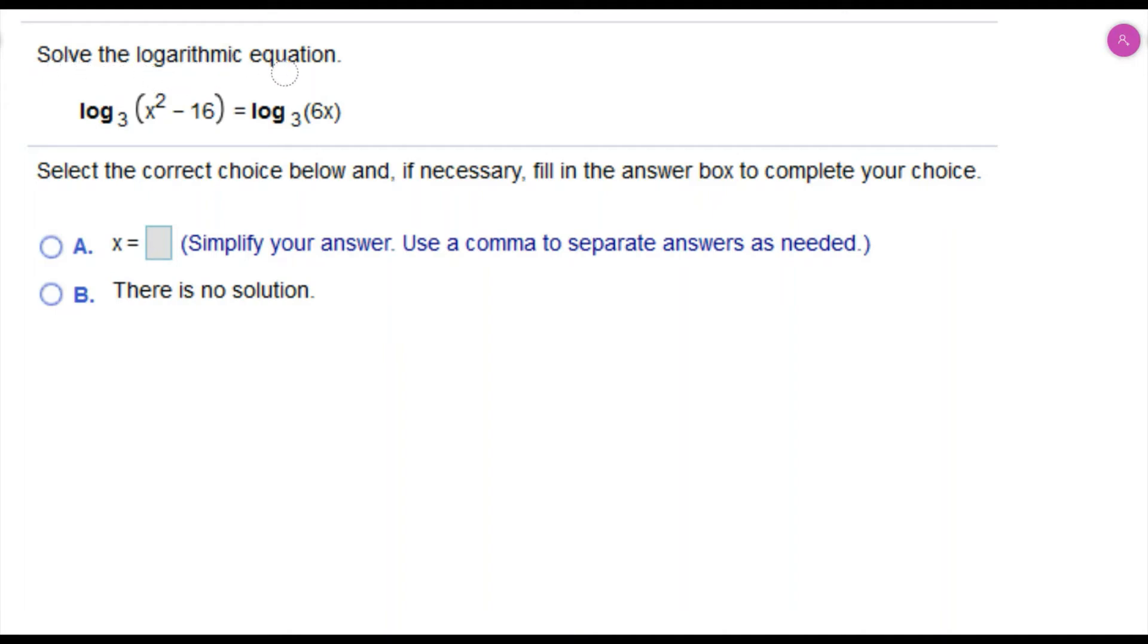This question says solve the logarithmic equation log base 3 of x squared minus 16 equals log base 3 of 6x. We're going to use the logarithmic property of equality. Because we have log with the same base on both sides of the equation, we're able to say that what's inside each of these logs have to equal each other.